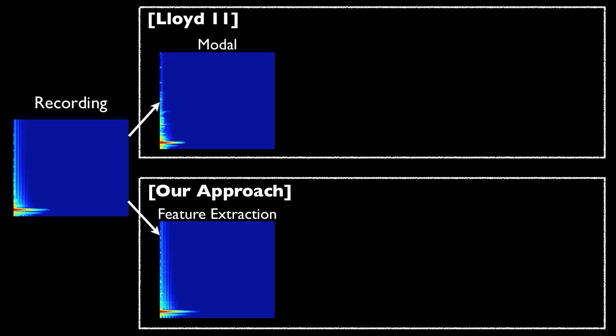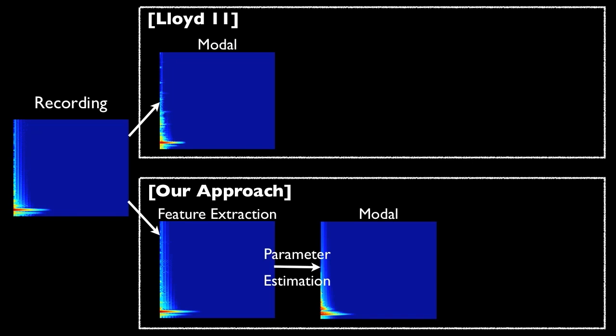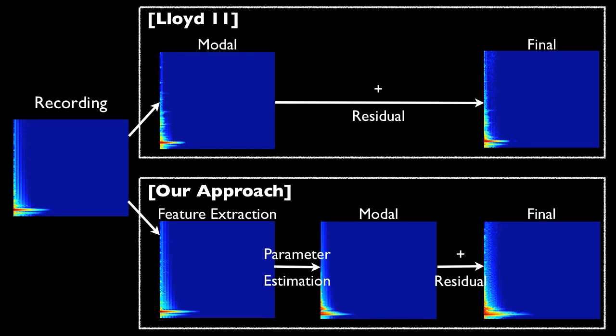We compare our results with an existing example-based sound synthesis framework. Given a recording, the previous work tracks its modal information, while we decompose it into modal features. The previous work directly uses those tracked modes, while we go on with fitting the features to estimate material parameters. Residual is added in both work.